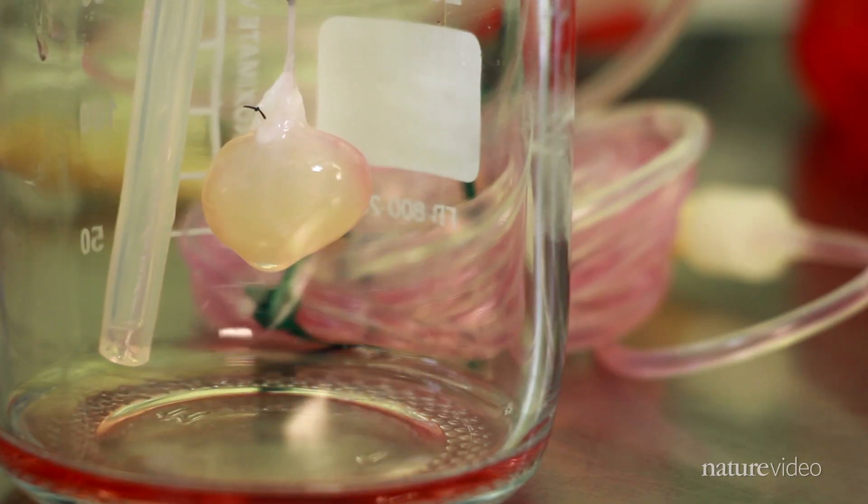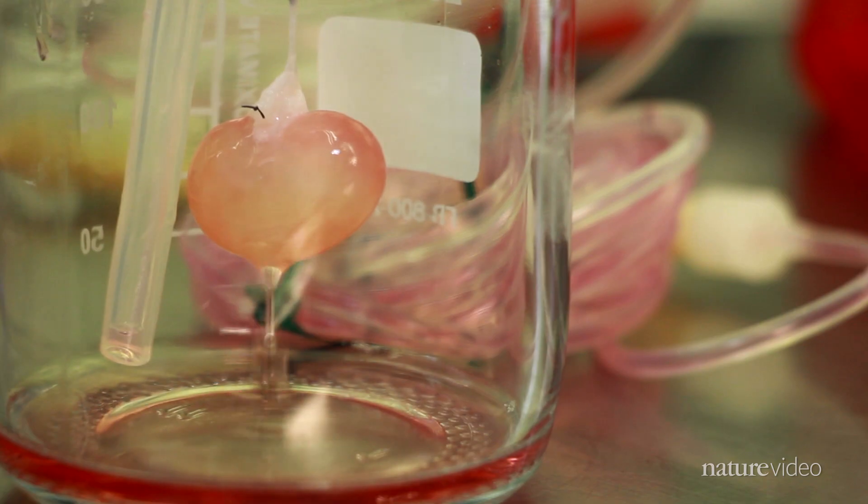So these kidneys started to make rudimentary urine. In the last step of this experiment, as the ultimate proof of principle, we were then able to take these kidneys from culture and transplant them in an animal model.